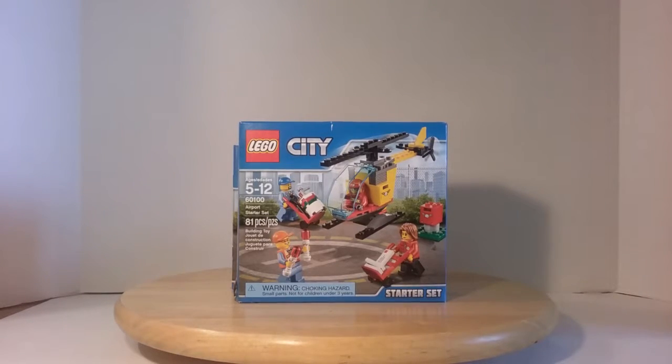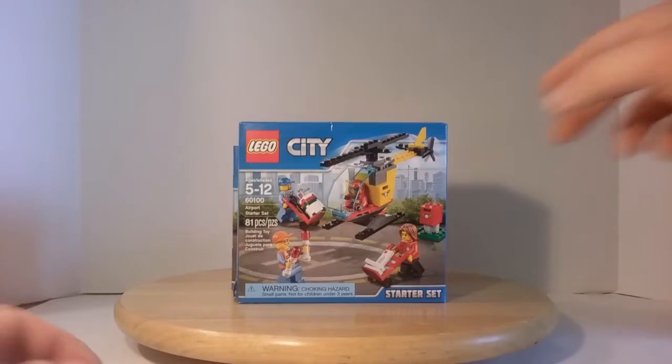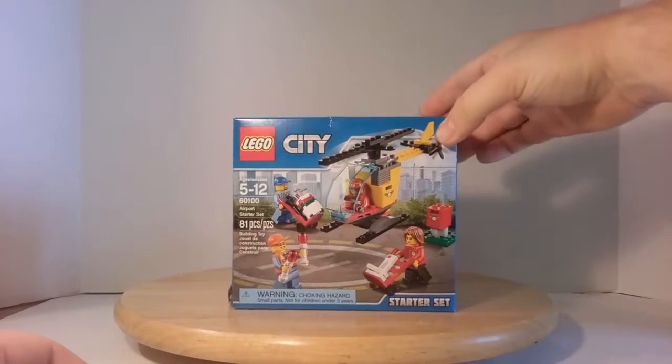But anyways, this is the Lego City airport starter set. Number code is 60100. Age suggestion is 5-12. Comes with 81 pieces and 4 minifigures.